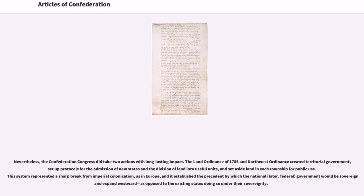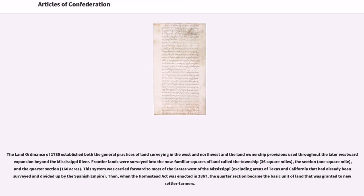Nevertheless, the Confederation Congress did take two actions with long-lasting impact. The Land Ordinance of 1785 and Northwest Ordinance created territorial government, set up protocols for the admission of new states and the division of land into useful units, and set aside land in each township for public use. This system represented a sharp break from imperial colonization, as in Europe, and it established the precedent by which the national — later federal — government would be sovereign and expand westward.